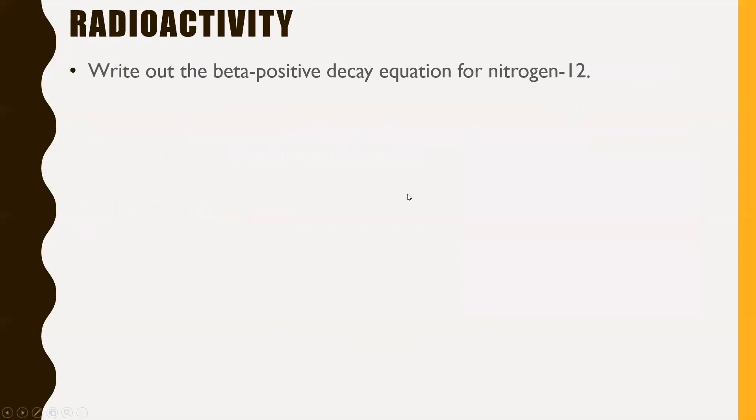So the next one: write out the beta positive decay equation for nitrogen-12. You might want to look back through your notes on this one for beta positive decay. This was one that always slips me up, but anyway, give this one a try.